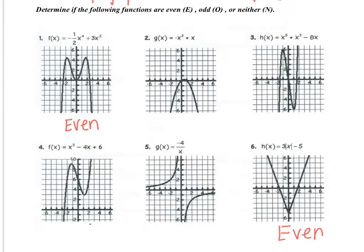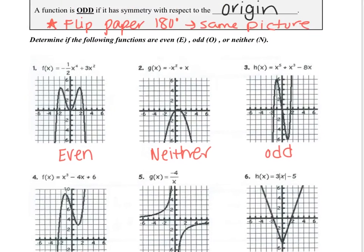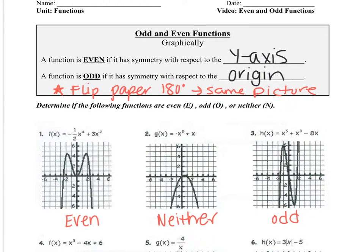You should have gotten that three was odd — you should have gotten the same picture for that. And for number five, you should have gotten odd as well. Also number four were all the same. And number two came out to be neither. This is a little tricky to show on the tablet, so we'll skip this graphical representation, but at least get the general concept: an even function has symmetry with the y-axis, an odd function has symmetry with the origin, and we'll go over the rest tomorrow.